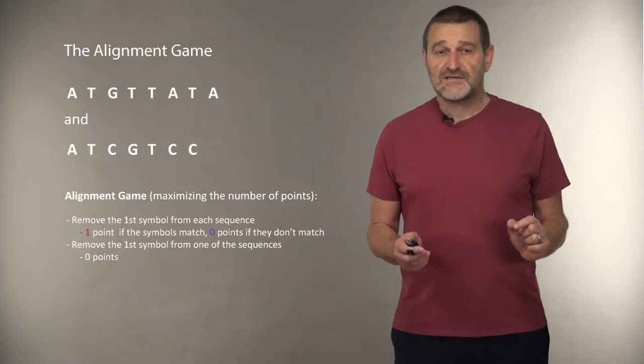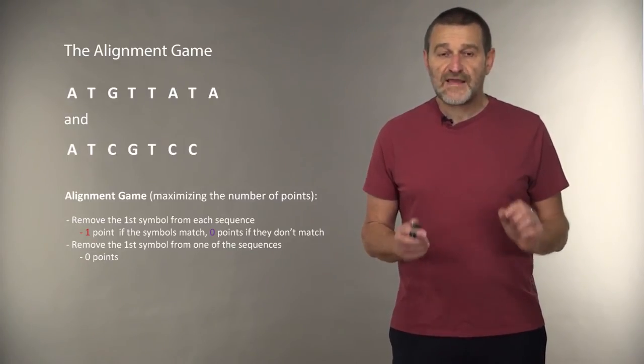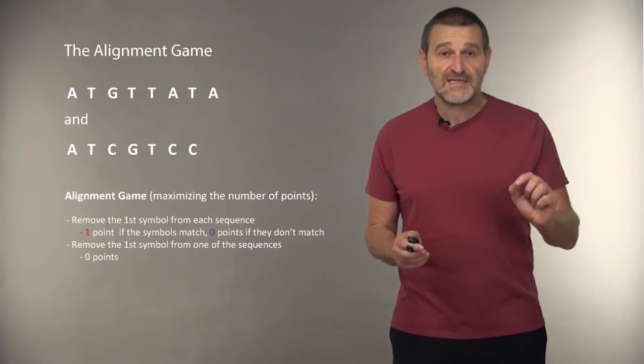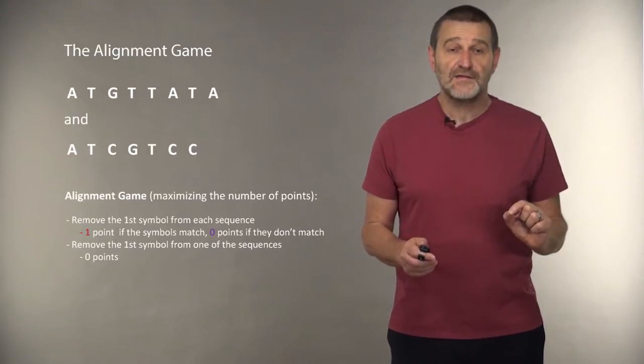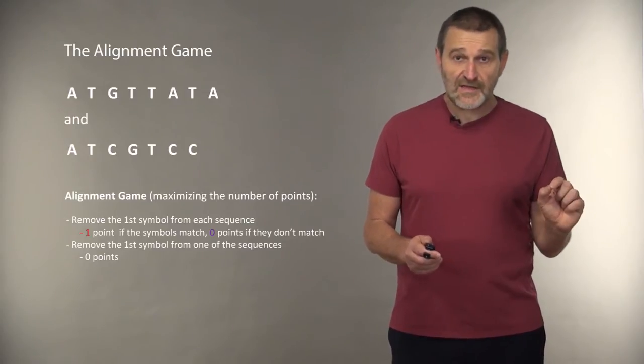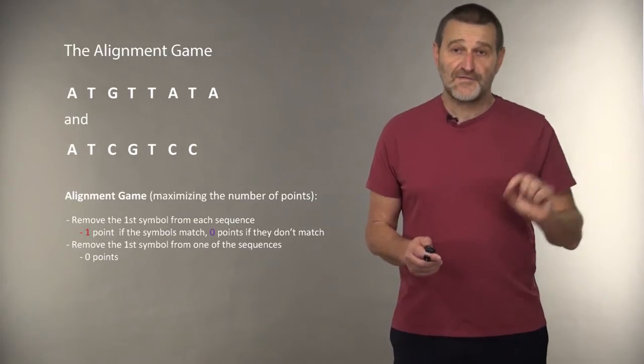We are given two sequences, and we can do the following things. We can either remove the first symbols from both sequences, and in this case, if these two symbols are the same, we get a score of one. If they are different, we get nothing. Alternatively, we can remove a single symbol from one of the sequences.